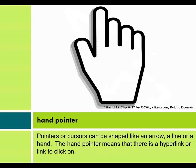Hand pointer. Pointers or cursors can be shaped like an arrow, a line, or a hand. The hand pointer means that there is a hyperlink or link to click on.